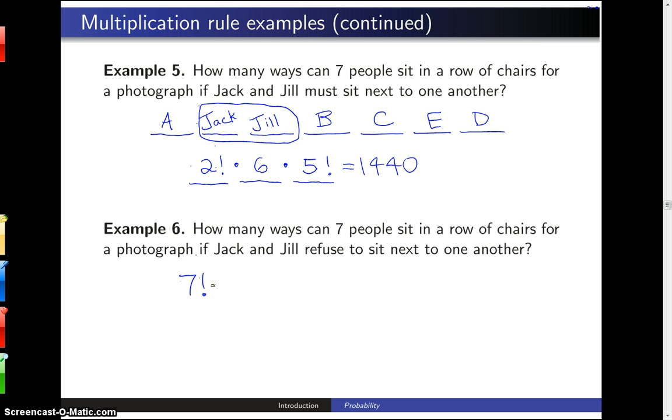In the previous example, of those seven factorial different ways of arranging the people, fourteen hundred and forty of them have Jack and Jill sitting next to one another.